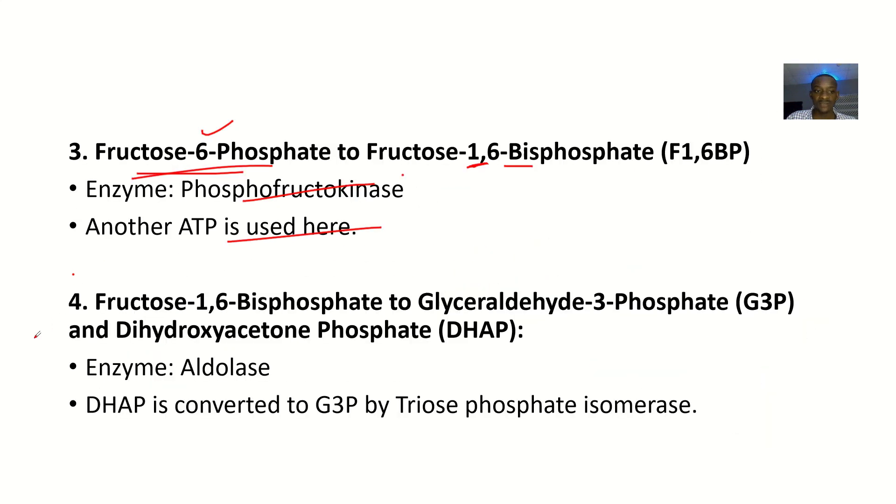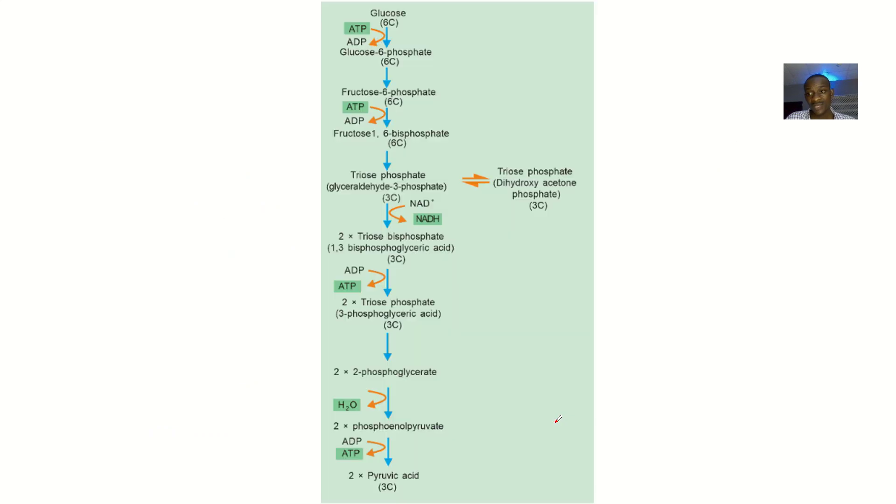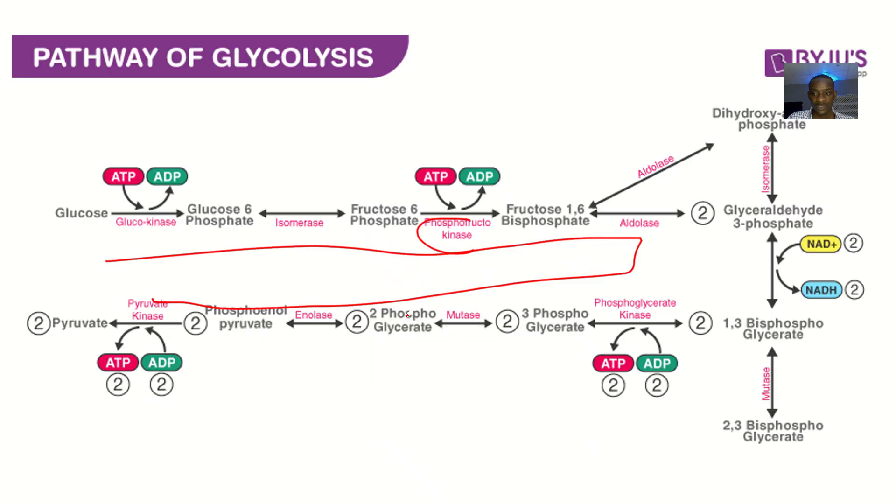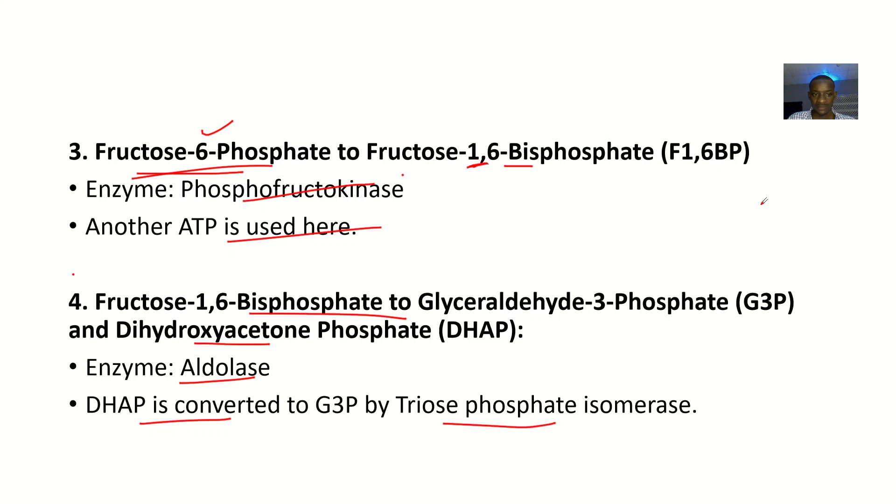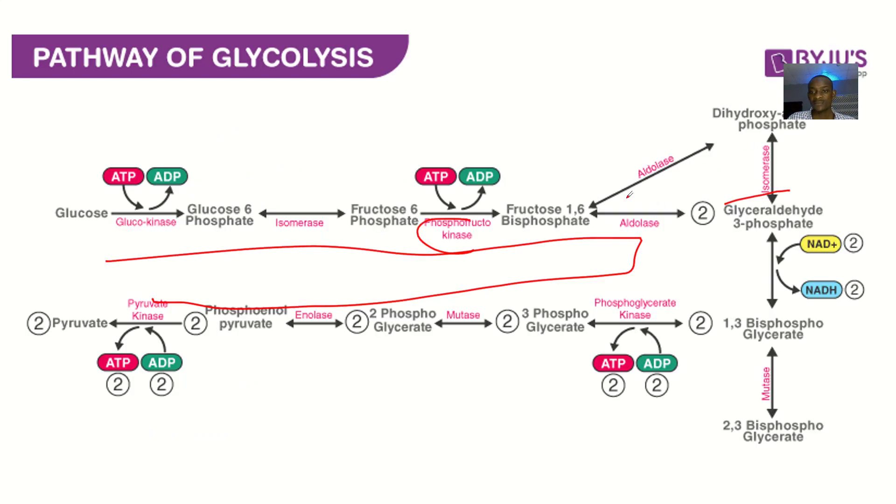This fructose-1,6-bisphosphate will be converted to glyceraldehyde-3-phosphate and dihydroxyacetone phosphate. The enzyme used is aldolase. DHAP is converted to glyceraldehyde-3-phosphate by triose phosphate isomerase.